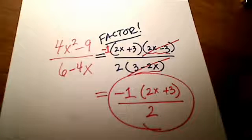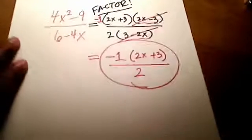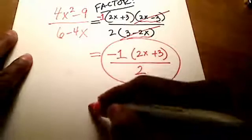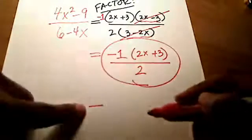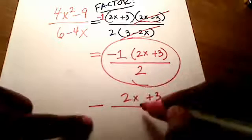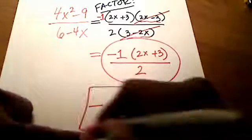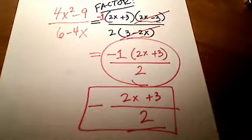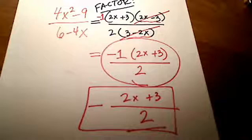You can write it in a bunch of different ways. If you want, you could write it this way. You could just put the negative out front like that. Just put the negative sign out front. Put this stuff up top, 2x plus 3. And then just put the 2 on the bottom. You can write it that way if you want. You can do the exact same thing. You can even put the negative down here with the 2 if you want. Last example of opposites.